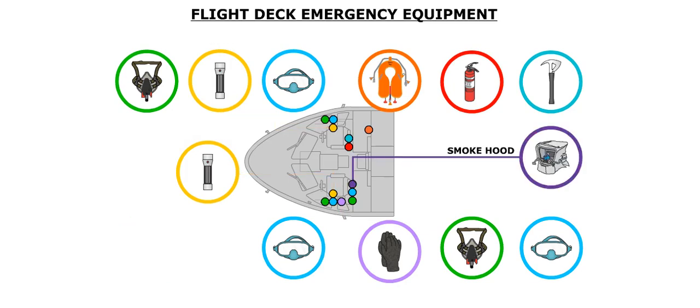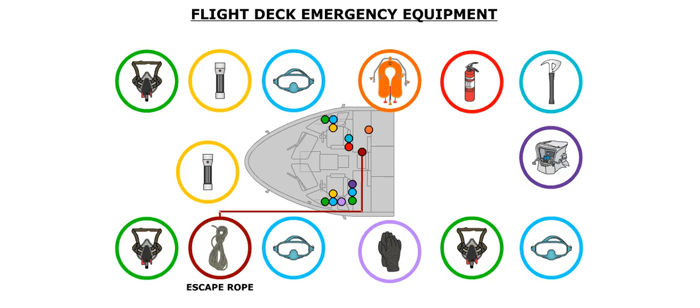Also, the flight deck has a smoke hood and an escape rope, which is stored above the electronics rack.